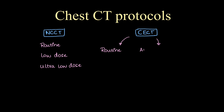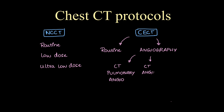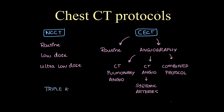Contrast-enhanced protocols include routine and angiography. The angiography protocol includes CT pulmonary angiography, CT angiography for systemic arteries, and a combined protocol. There is another technique called triple rule-out CT, done in acute chest pain, which we will discuss briefly.